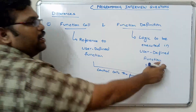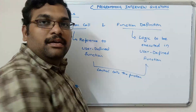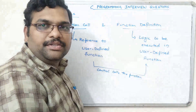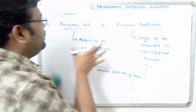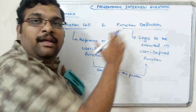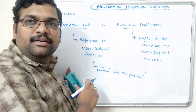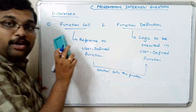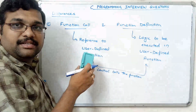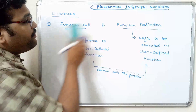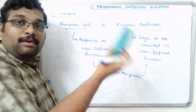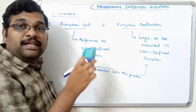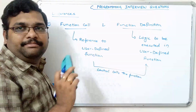This function definition should be written outside the main function. Whenever the control calls the function, automatically it will move to the function definition. That is the difference between a function call and a function definition. Apart from these two, there is one more thing called a function declaration.